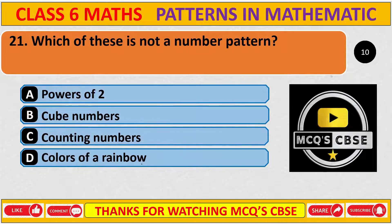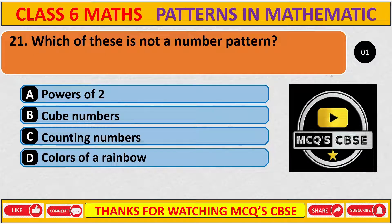Which of these is not a number pattern? The correct answer is C: the color of a rainbow.